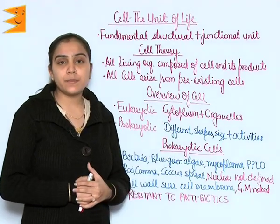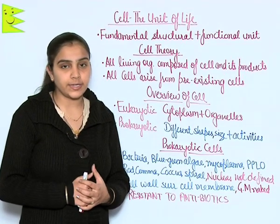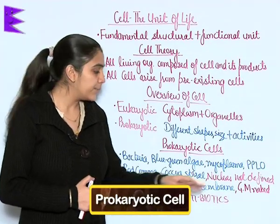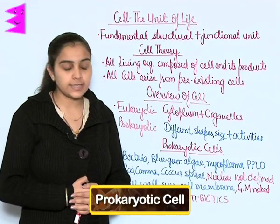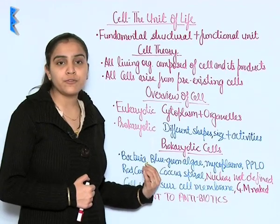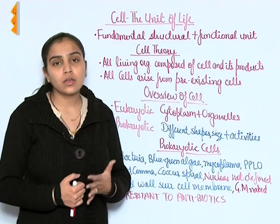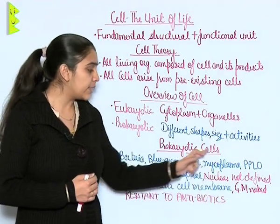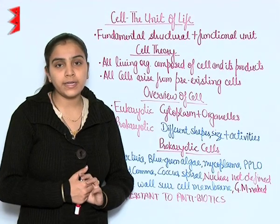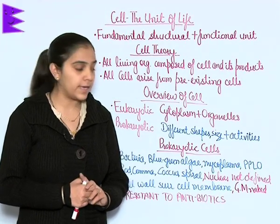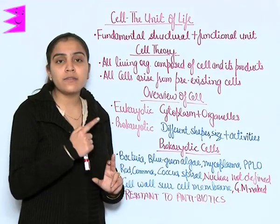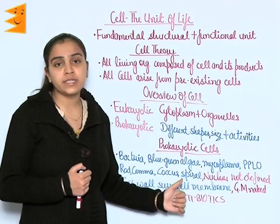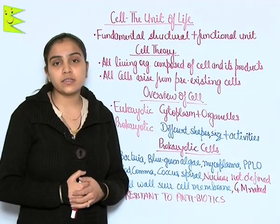Prokaryotic cells are found in bacteria, blue-green algae, mycoplasma, and PPLO. The four basic shapes of bacterial cells are rod shape, comma shape, bacillus shape, and coccus shape. In prokaryotic cells, the nucleus is not defined and the genetic material is naked. A cell wall is present surrounding the cell membrane, and a unique property of these cells is that they are resistant to antibiotics.